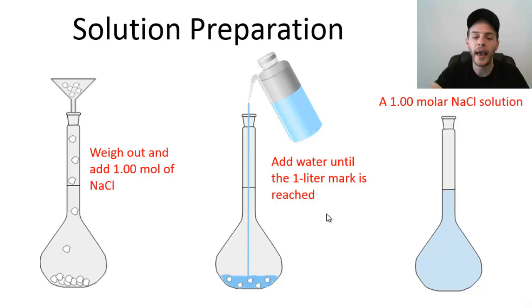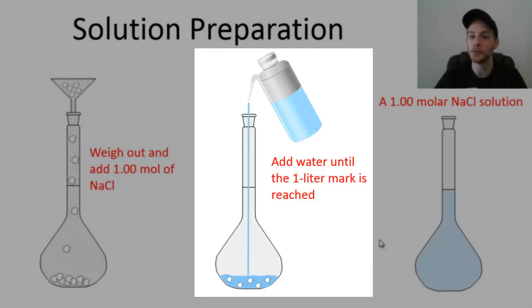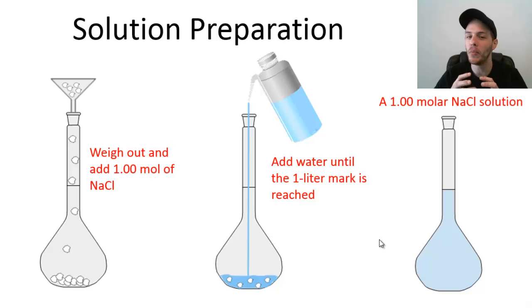In the next step, you would add your solvent, which is water, so we would add that water until the one liter mark is reached. Notice that we're not adding one mole of sodium chloride to a liter of water, because remember, to get the molarity, the bottom of that term, the denominator, is not liters of solvent, it's liters of solution. So if we added one mole of sodium chloride to one liter of water, that would result in a total volume that is greater than one liter.